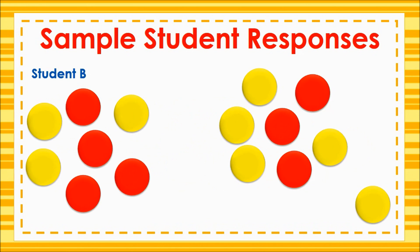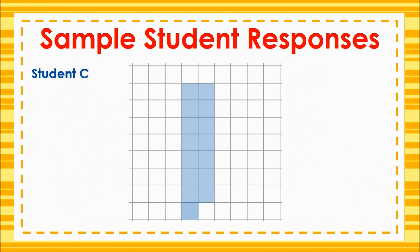Student B says: I used 15 counters. I put them into two equal groups. Each group has seven counters and I have one counter left over, so I know that 15 is an odd number. Student C says: I counted by twos to color 15 squares in two columns on graph paper. Since one column is longer than the other, I know that 15 is an odd number.